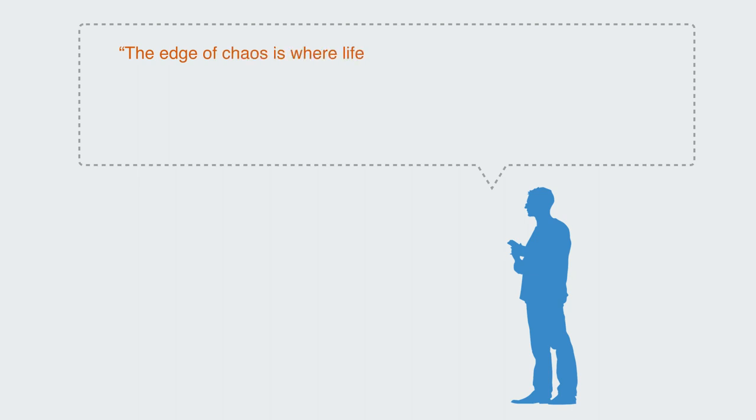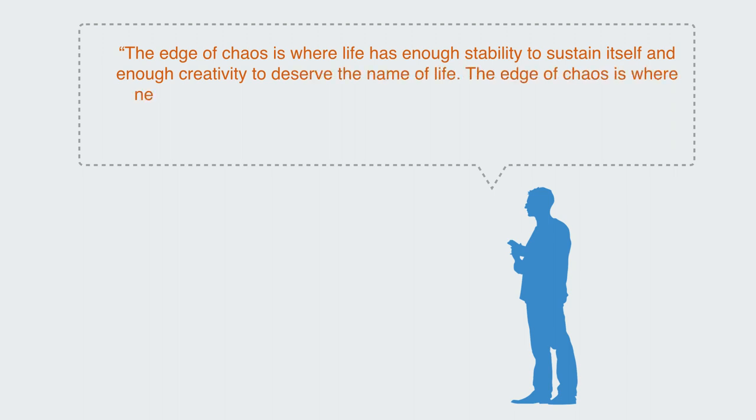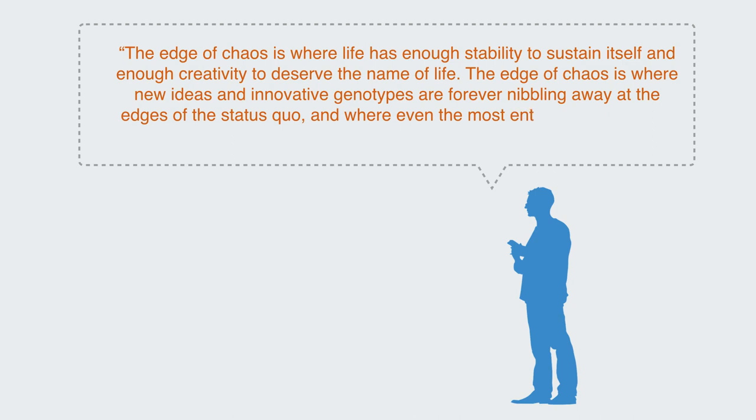Michael Waldrop gives an account of this when he writes: The edge of chaos is where life has enough stability to sustain itself and enough creativity to deserve the name of life. The edge of chaos is where new ideas and innovative genotypes are forever nibbling away at the edges of the status quo and where even the most entrenched old guard will eventually be overthrown.